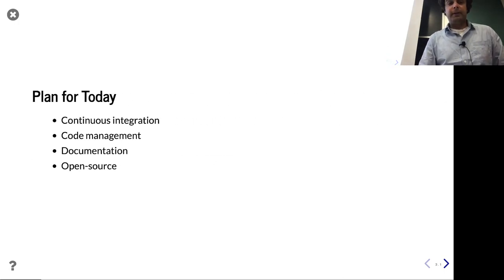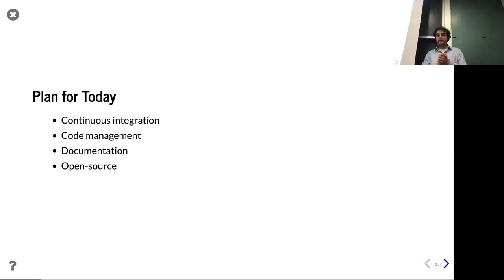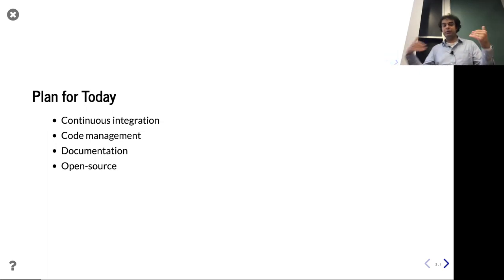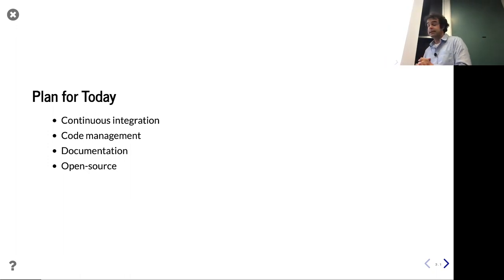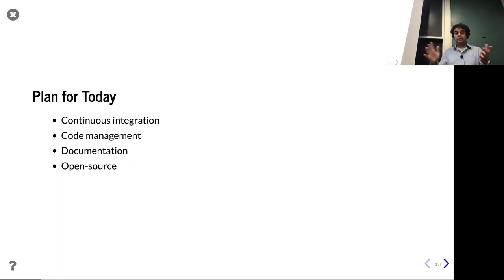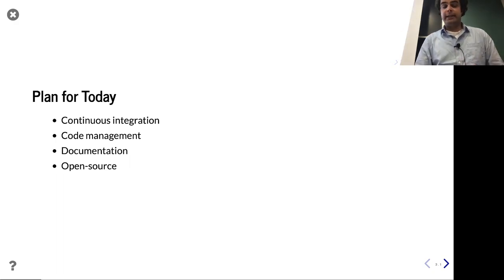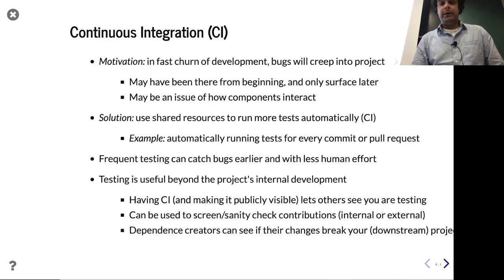Today's lecture is about that — given you have an initial thing that works, and you want to improve it on all three dimensions: correctness, ease of working with, and efficiency. More concretely, the tools we're talking about today include continuous integration, code management, documentation, and a brief primer on open sourcing in general.